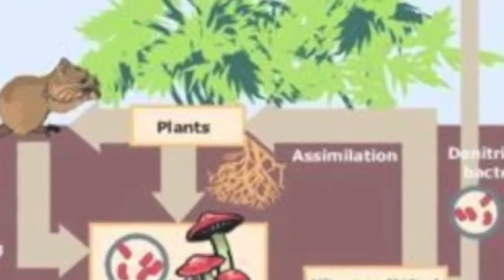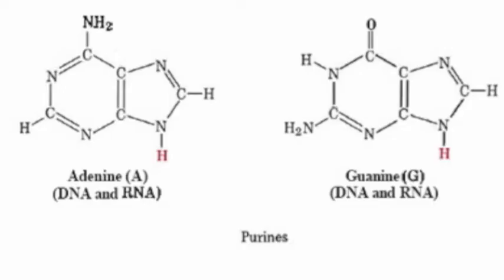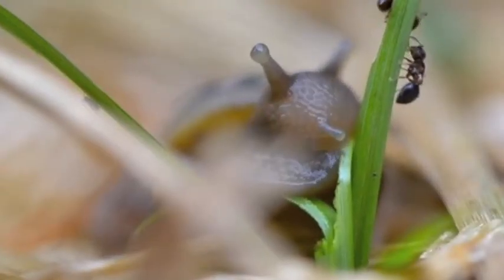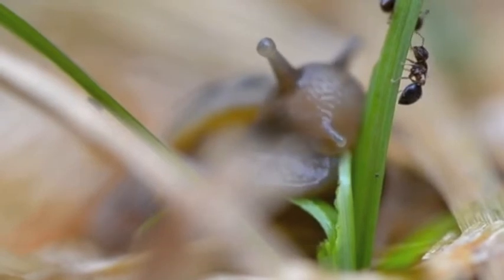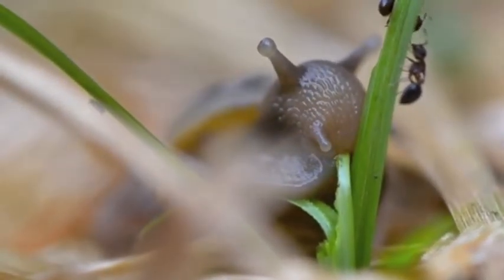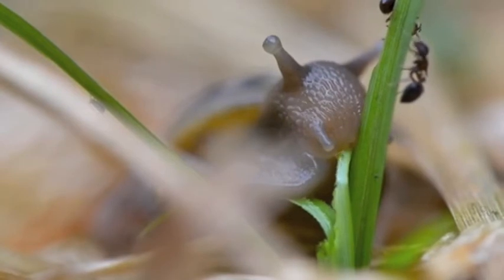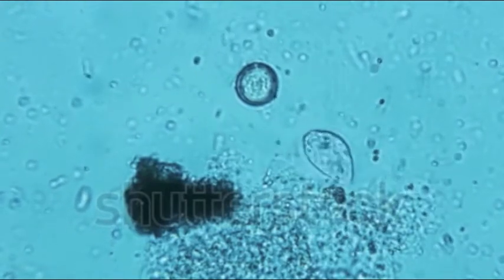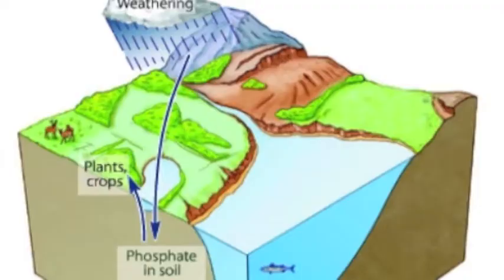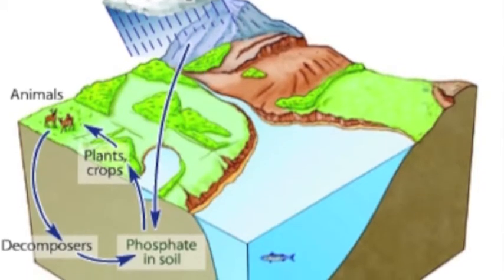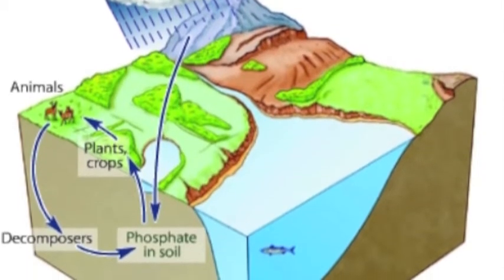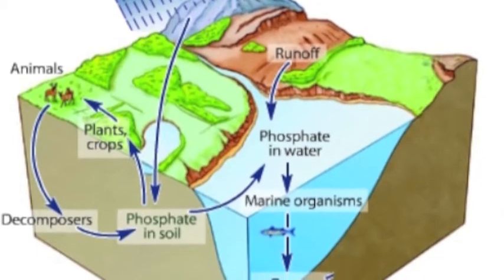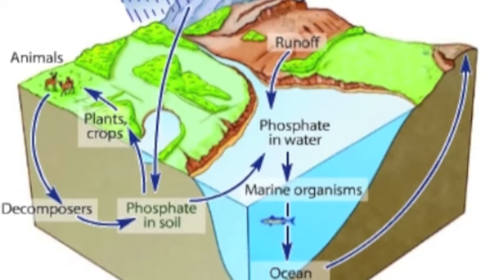Nitrogen allows primary producers to make amino acids, build nucleic acids, and form DNA, RNA, and proteins. As consumers devour these producers, they take in their nitrogen products and use them to make their own. This keeps them alive so they can perform cellular respiration and release carbon. When organisms die, nitrogen decomposers break down their matter. Phosphorus forms rocks, soil minerals, and parts of RNA and DNA. It flows into oceans, and the phosphorus cycle moves through the web, allowing creatures to exist and create more carbon dioxide.